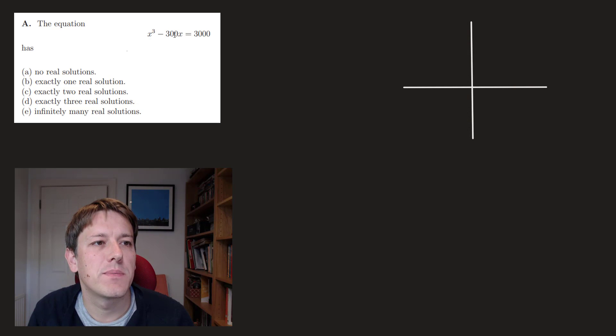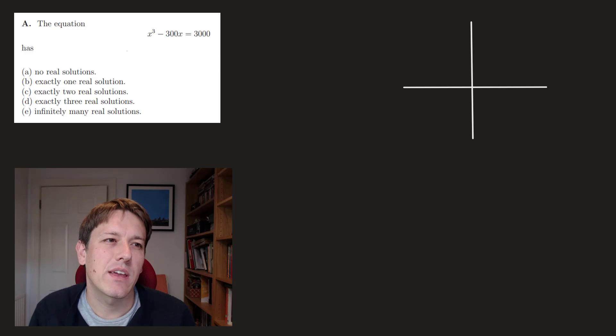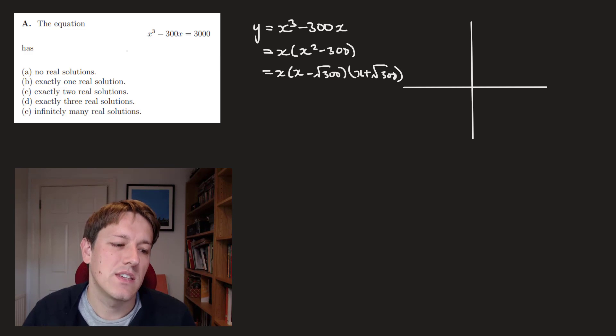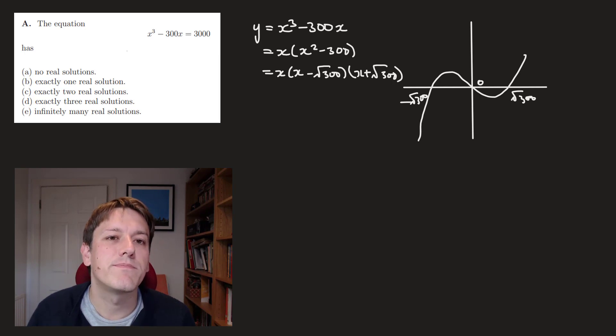So, in part A here, we've got the equation x cubed minus 300x equals 3,000 and we want to know how many real solutions it has. And although our instincts for polynomials should be usually to put everything equal to zero, we're going to take the form of the question here as a bit of a hint and think about these left-hand side and right-hand side separately here. So if I had the graph of y equals x cubed minus 300x, that's the same as x times x squared minus 300 or x minus the square root of 300 times x plus the square root of 300 using the difference of two squares.